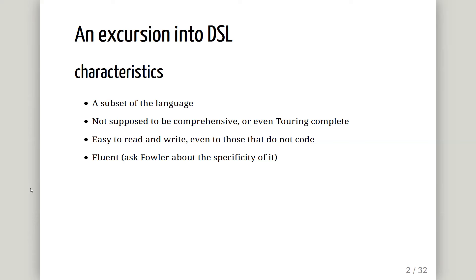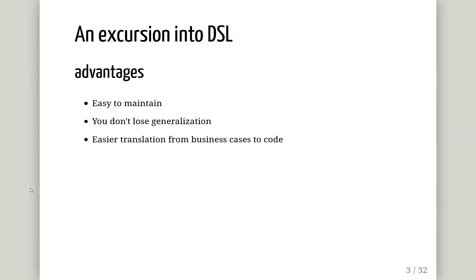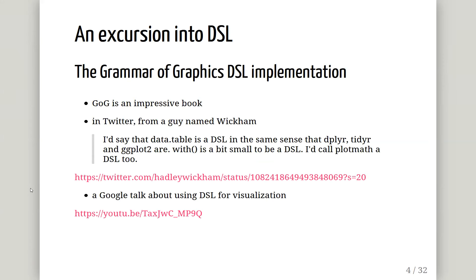If you want to read the book, it's at your local library or on Amazon. It has advantages and benefits: it's easy to maintain, you base it on the domain model, people can read it, you don't lose generalization, and it's a translation from business case to code. The grammar of graphics is one DSL implementation worth mentioning.